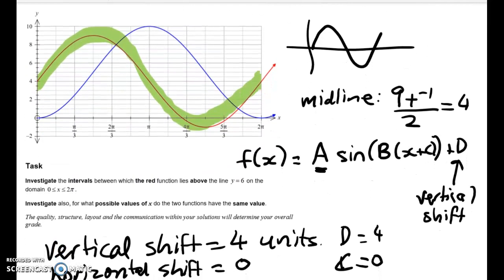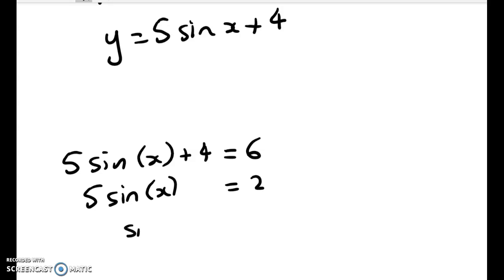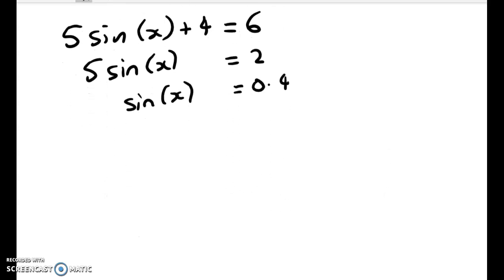So the first thing that we want to do is to investigate the intervals between which the red function lies above the line y is equal to 6. So let's do that first up. So I'm going to solve 5 sin(x) + 4 is equal to 6, and I'm going to do that using general solutions. That gives me 5 sin(x) is equal to 2. Sin(x) is equal to 0.4.